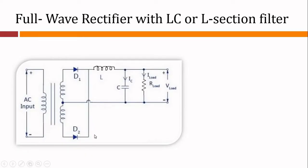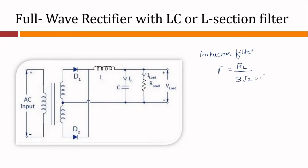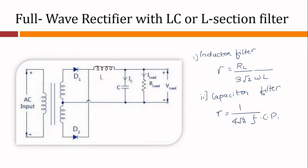In case of an inductor filter, the value of ripple factor is RL upon 3 root 2 omega L. For a full wave rectifier with capacitor filter, the ripple factor R is given as 1 upon 4 root 3 F C RL, where RL is the load resistance.